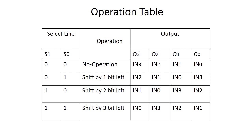Now, with a multiplexer of size 4-to-1, we will have 4 output lines: O3, O2, O1, O0, and 4 input lines: IN3, IN2, IN1, IN0. There will be 2 select lines, S1 and S0, and the number of operations that can be performed will be 3: shift by 1 bit left, shift by 2 bits, and shift by 3 bits. So whatever we discussed previously, we are utilizing it in this operation table.